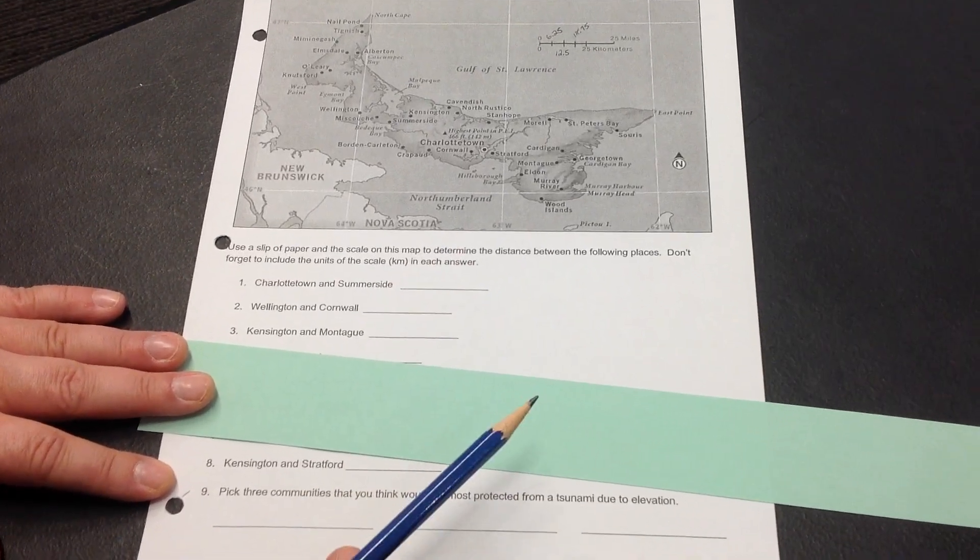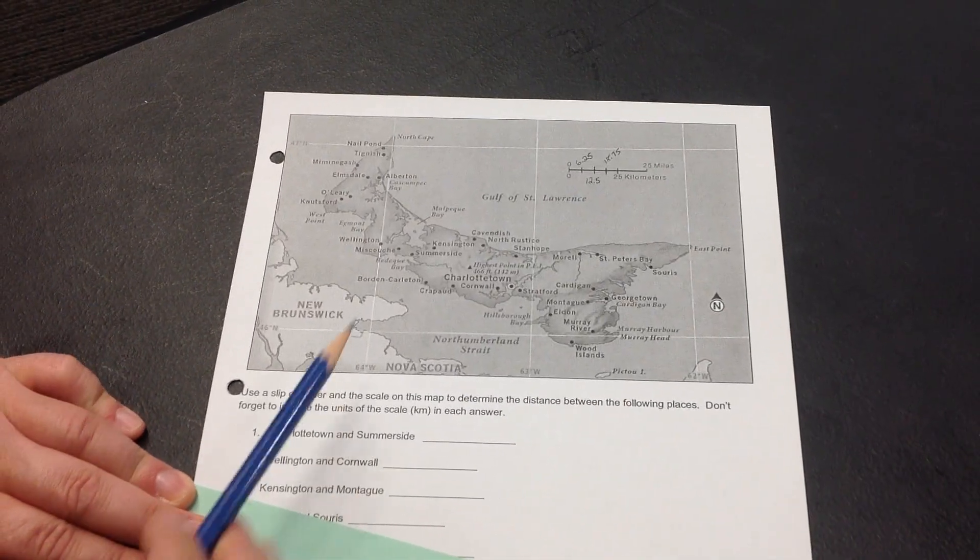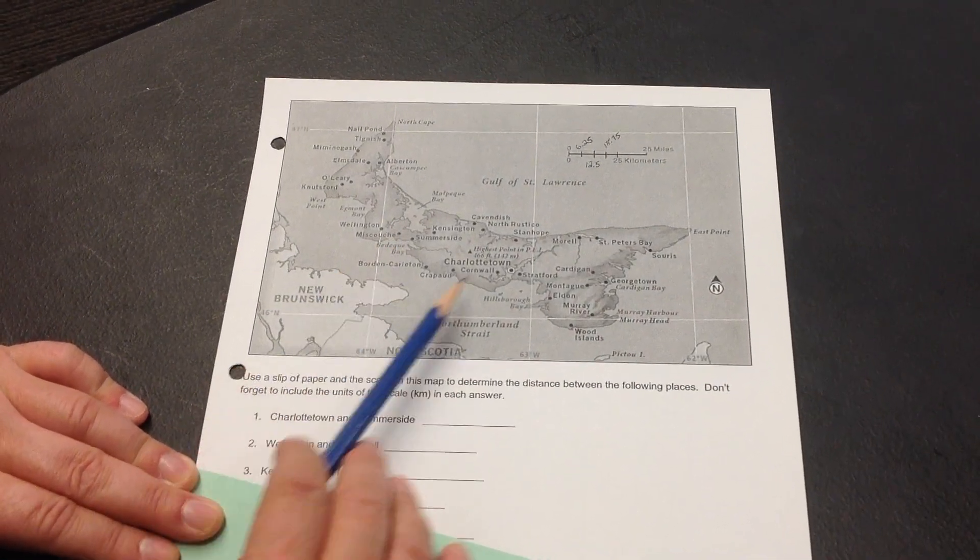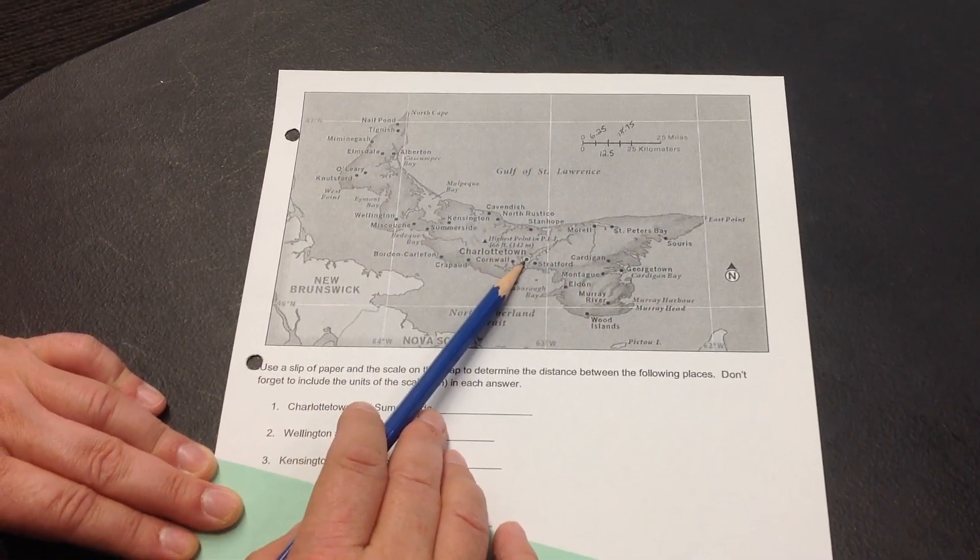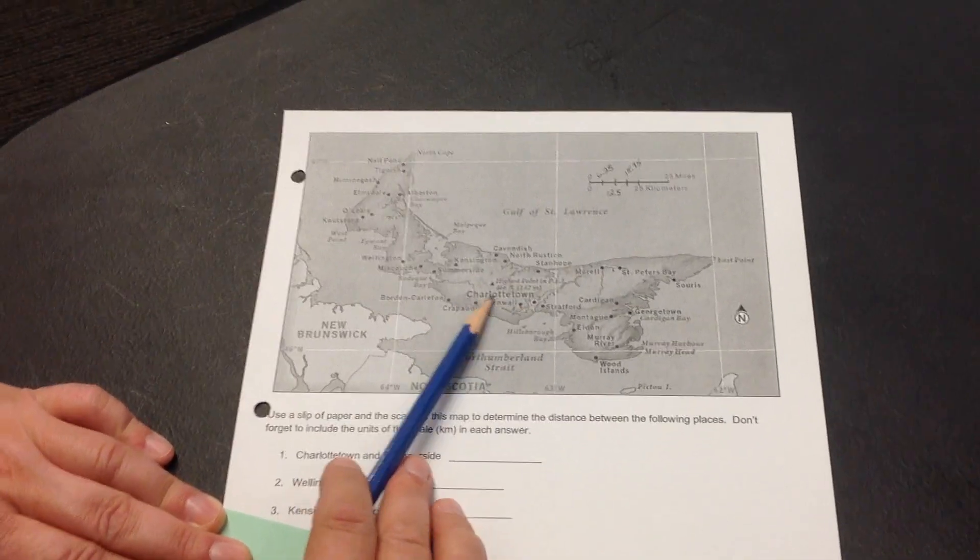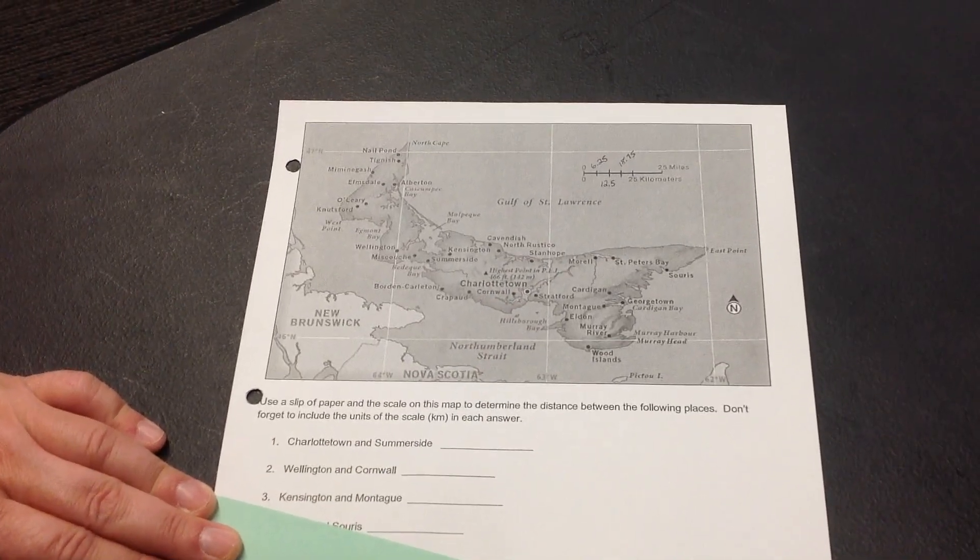So, we need to find first Charlottetown and Summerside. Here is Summerside, here is Charlottetown. Charlottetown has a dot that's bigger and the words Charlottetown are bigger because Charlottetown is the capital city of this province.